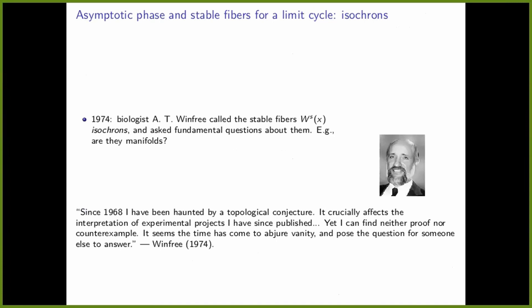These are classical theorems proved in the 1970s by Neil Fenichel and Hirsch, Pugh, and Shub. I think they're pretty amazing. One of the most common settings where people have heard of asymptotic phase is in the context of limit cycles. In the 1970s, a biologist named Winfree was very interested in the stable fibers — what I call the level sets of the asymptotic phase function. He called them isochrones, from the root meaning 'same time.'